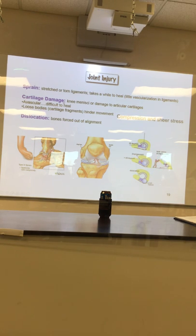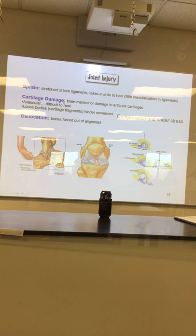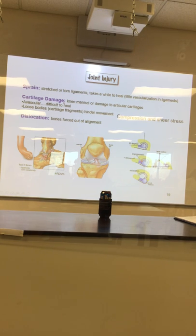The same story applies to cartilage — what color is it? Silvery white. When you do your first dissection you're going to see it and get it — like you've been saying this the whole time. Cartilage has a look to it.